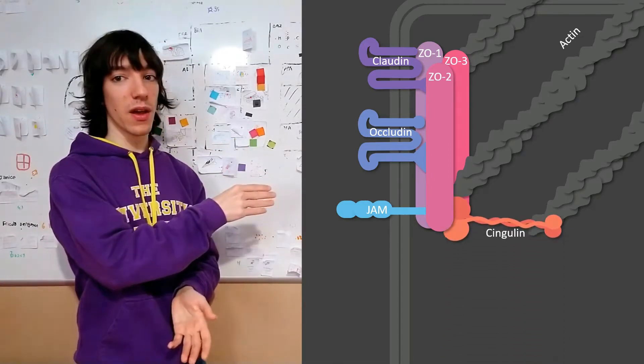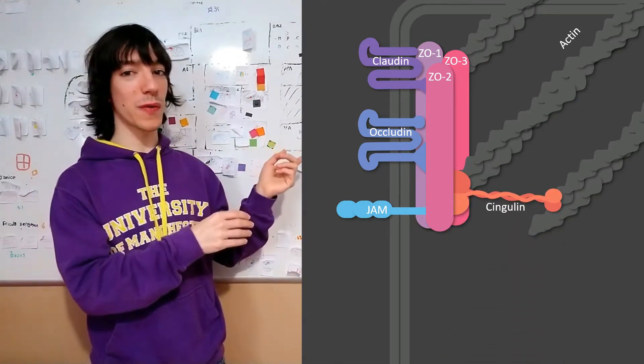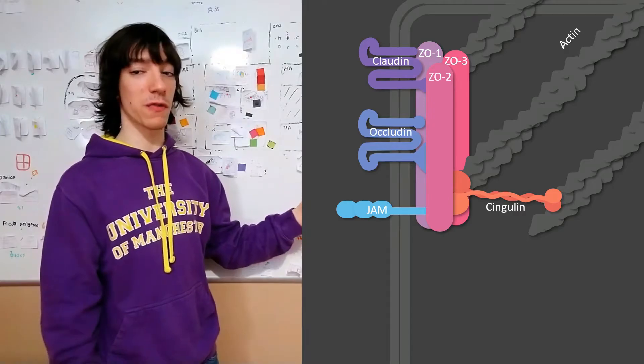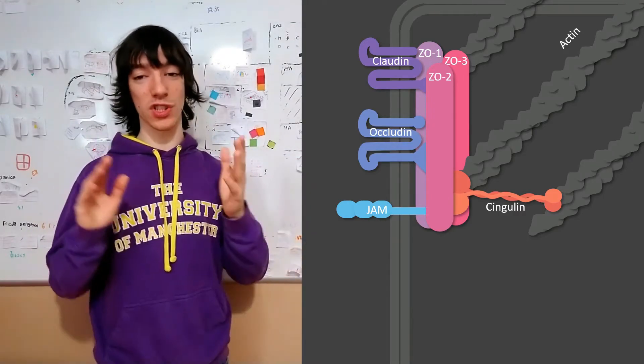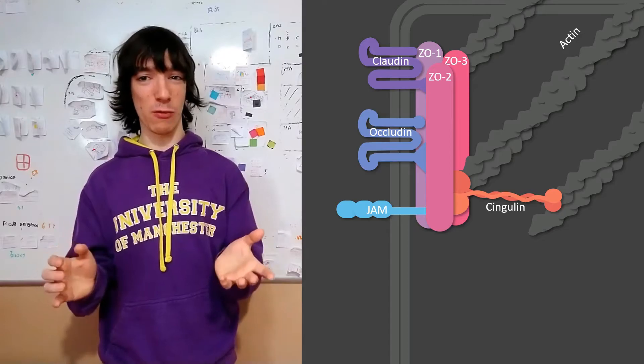And it's probably beyond the level that you require for whatever class you are studying this in. Just to mention one, I have chosen cingulin, which connects the zonula occludens proteins with actin microfilaments, and also with a bunch of other adapters, regulators, and even with microtubules.